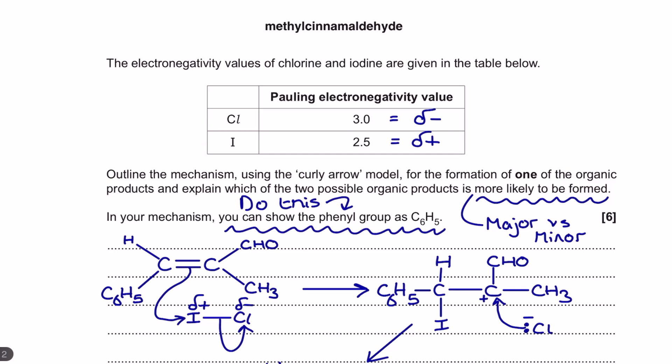Now you've also been provided with the electronegativity values for chlorine and iodine using the Pauling scale, and you've been given this because what you need to decide as part of your answer is which end of your electrophile, which is the ICl, is going to be delta plus and delta minus respectively. As you can see here, the more electronegative an element is, the more likely it is to be that delta minus, and that's how I've made this allocation just here.